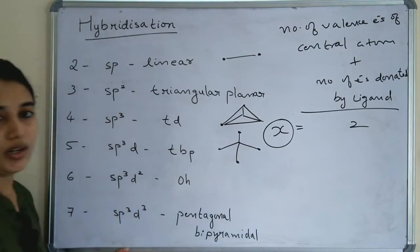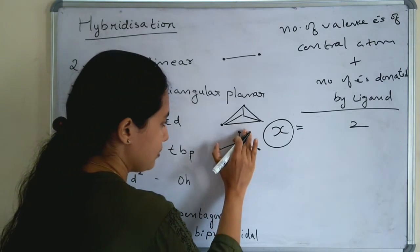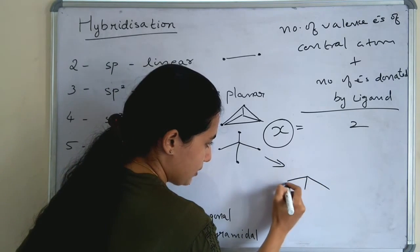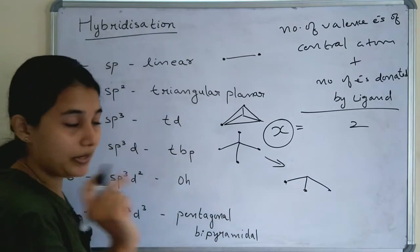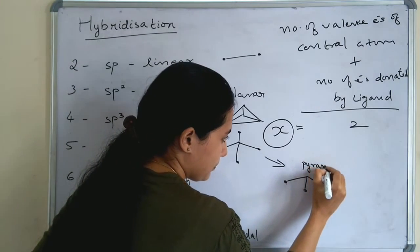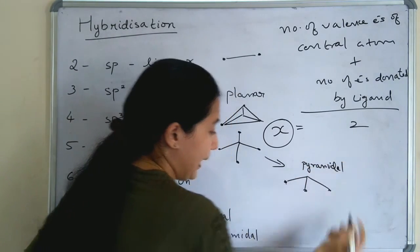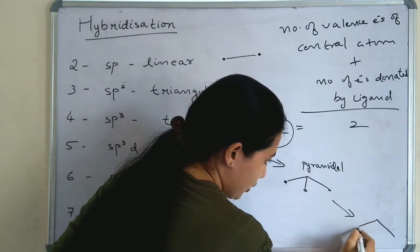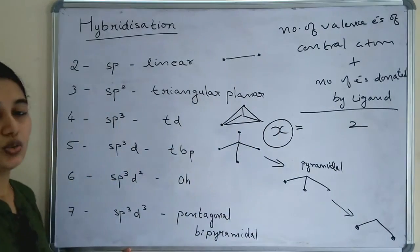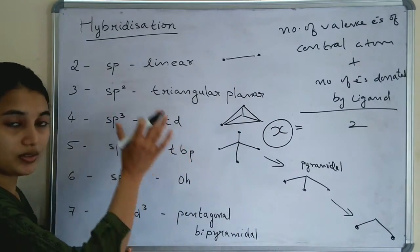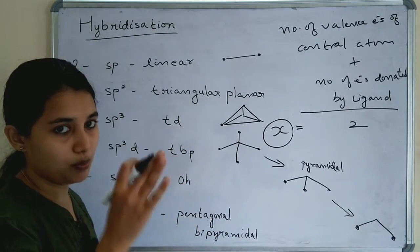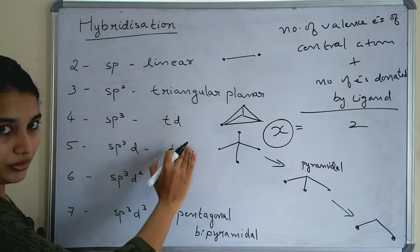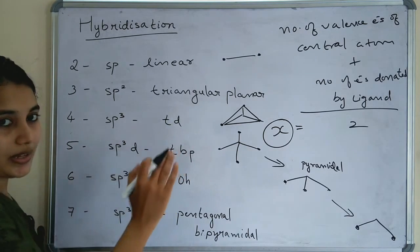If one of the ligands is removed from a tetrahedral parent structure, a bent shape is formed. So from one parent structure we can determine the shape of a molecule. For example, the sp3 parent structure is tetrahedral, and sp3d gives a trigonal bipyramidal parent structure.